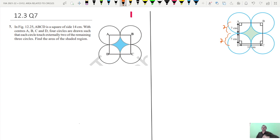Now what is the area of the shaded region? Area of the shaded region will be area of the square. It's simple. Area of the shaded region is equal to